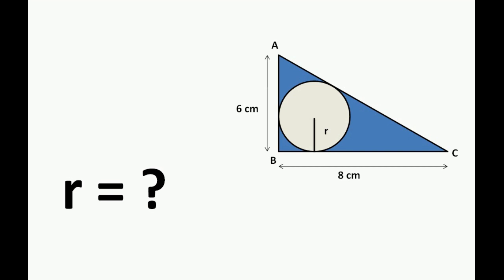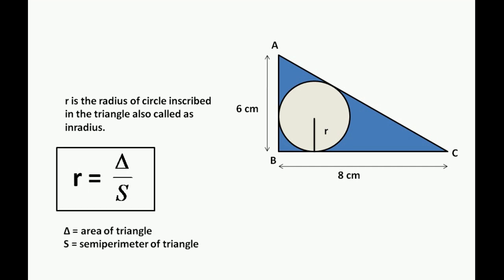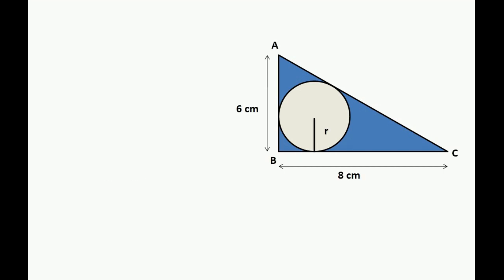Please do attempt the question and match your answer with the solution. Since R is the radius of the circle inscribed in the triangle, it is also known as the inradius of the triangle. The inradius is given by the formula R equals del over S, where del is the area of the triangle and S is the semi-perimeter of the triangle.